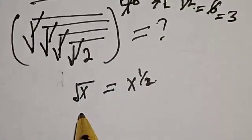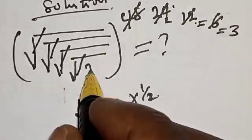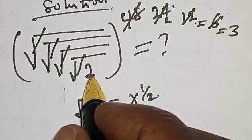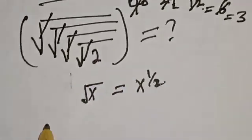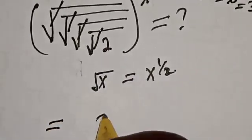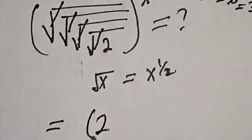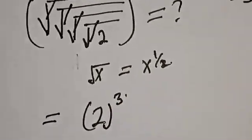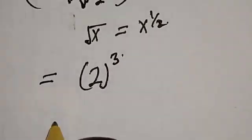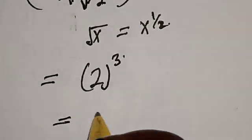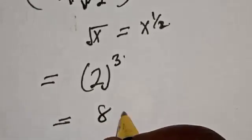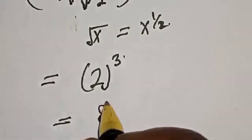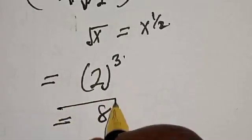Now if you cancel this, this divided by 2, this is equal to 3. Now we are left with what we have here: 2. This is equal to 2 raised to power 3. And this is equal to 8 — 2 raised to power 3 is 2 times 2 times 2. That is our answer.